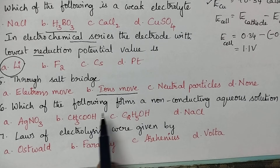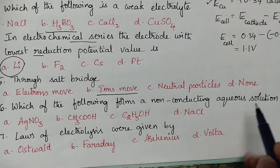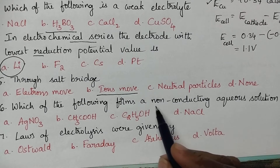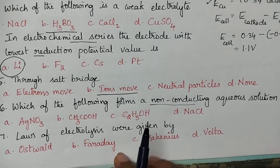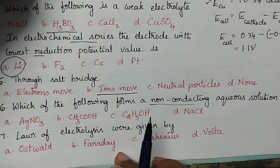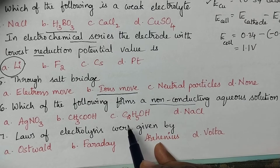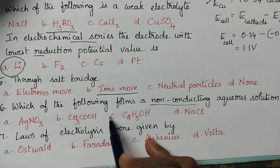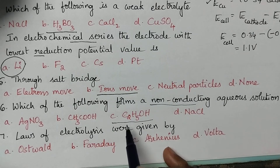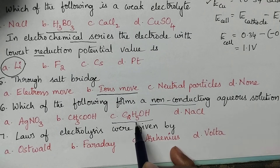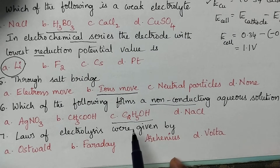Which of the following forms a non-conducting aqueous solution? A non-conducting aqueous solution means the substance is a non-electrolyte. Alcohol — specifically ethyl alcohol — is the non-electrolyte.